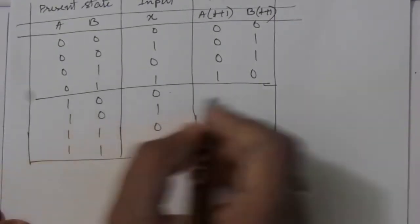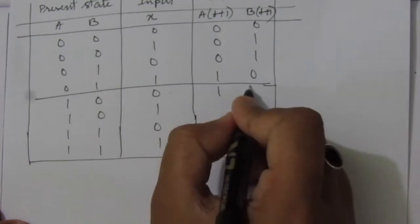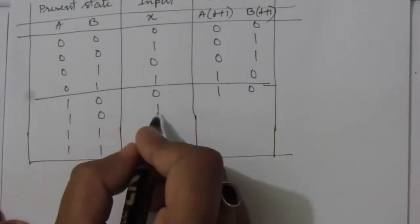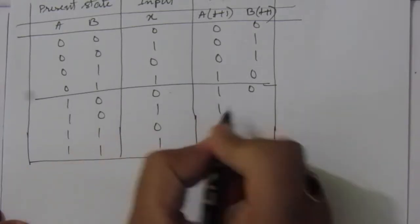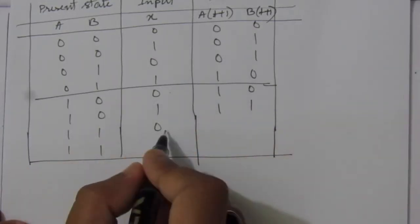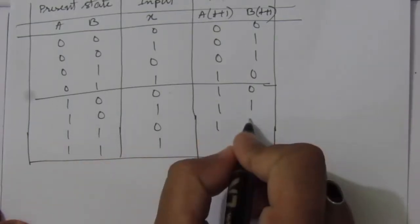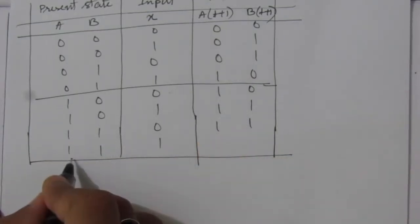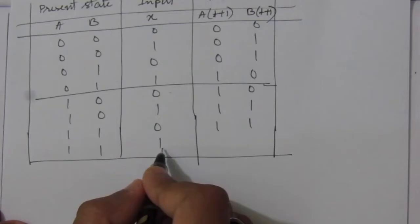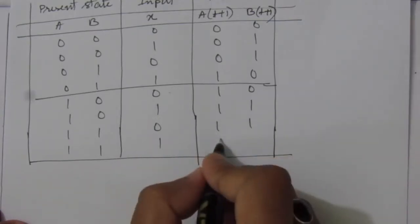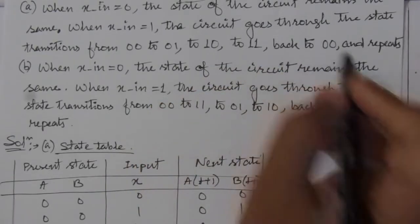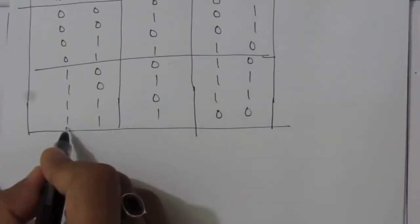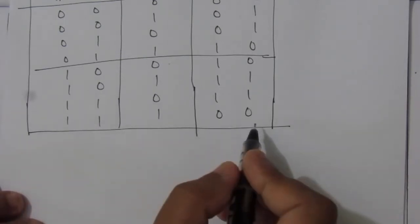Continuing the state table: for present state 11 with input 0, next state remains 11. With input 1, transition 11→00, so next state is 00. We have now completed the state table.